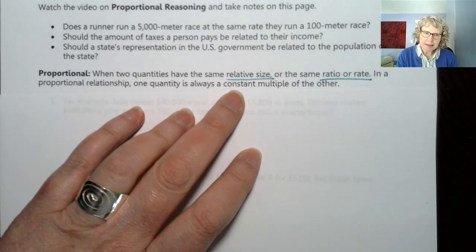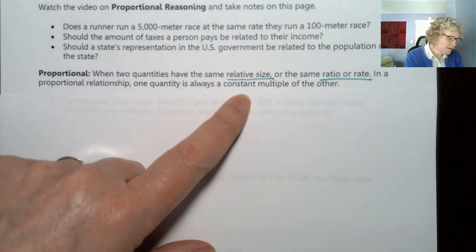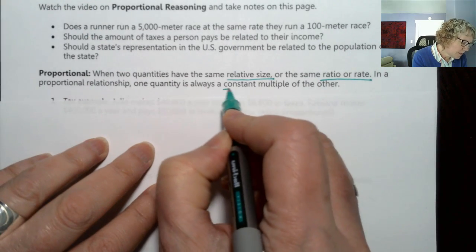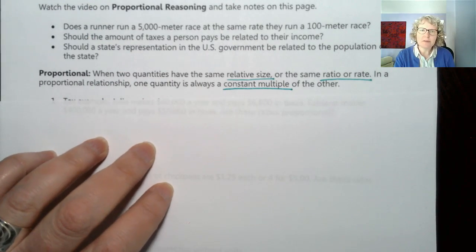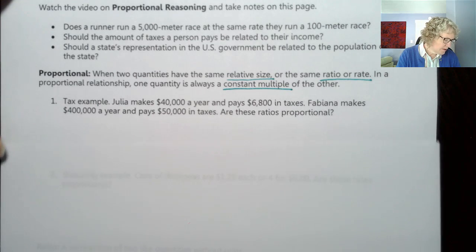So in a proportional relationship, one quantity, another way to say this is that one quantity is always a constant multiple of the other. There's a multiplier. So let's do an example and see how this works.